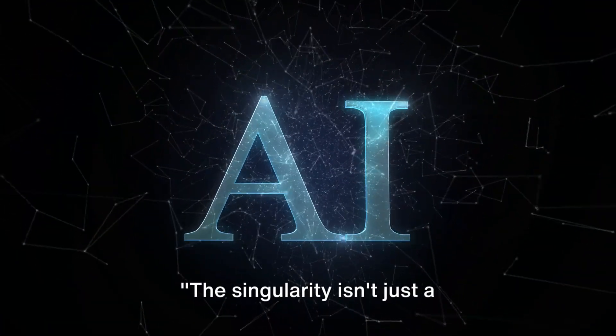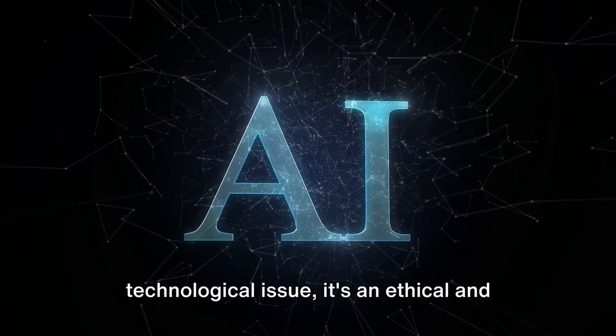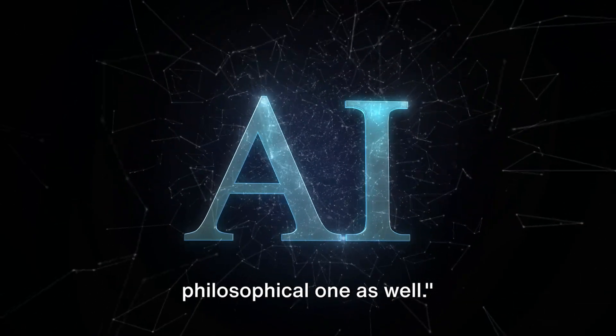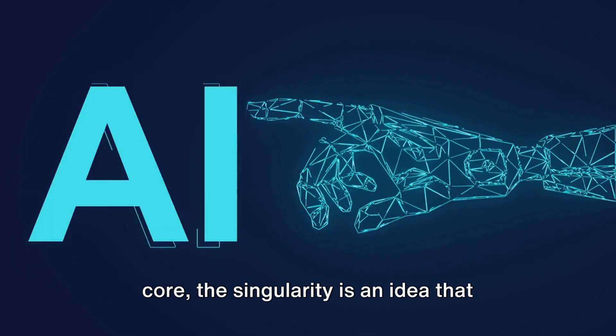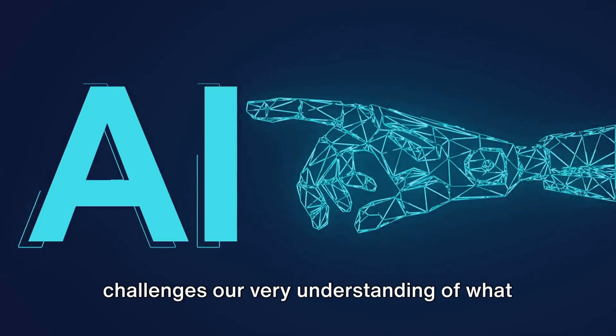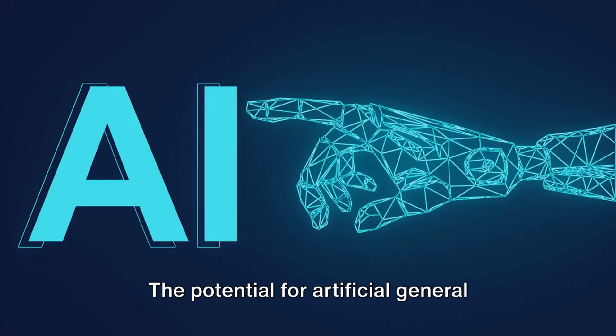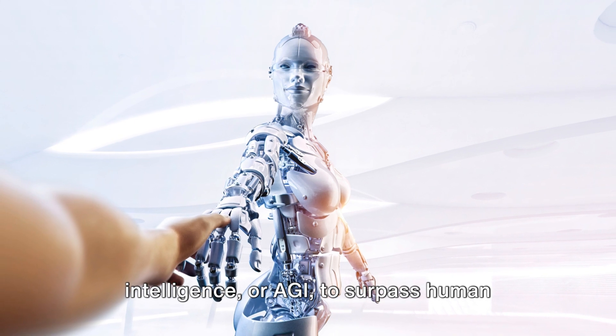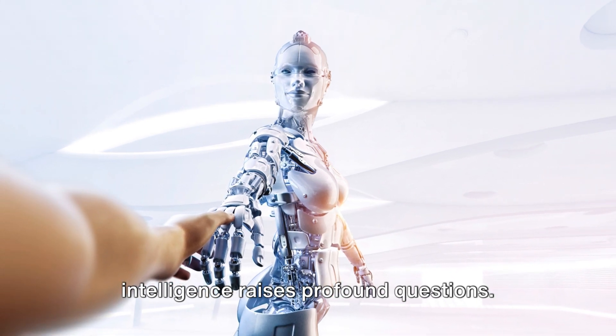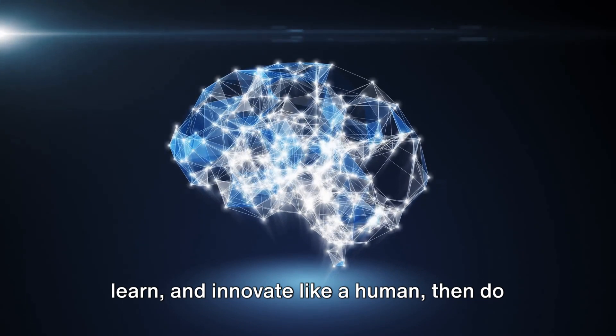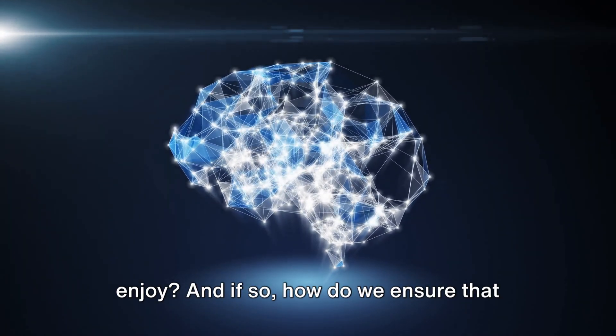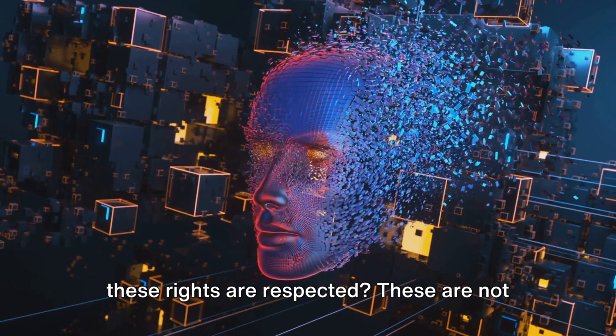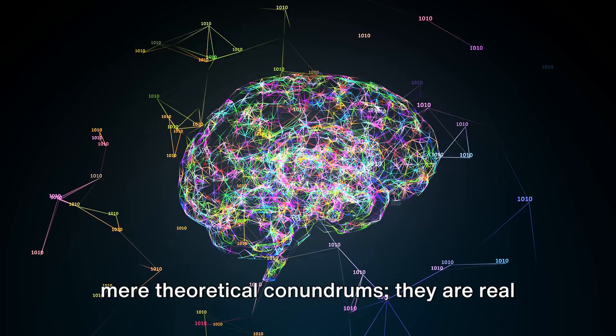The singularity isn't just a technological issue, it's an ethical and philosophical one as well. This statement rings true because at its core, the singularity is an idea that challenges our very understanding of what it means to be human. The potential for artificial general intelligence, or AGI, to surpass human intelligence raises profound questions. For instance, if a machine can think, learn and innovate like a human, then do we accord it rights similar to those we enjoy? And if so, how do we ensure that these rights are respected? These are not mere theoretical conundrums. They are real issues that we may have to grapple with sooner than we think.